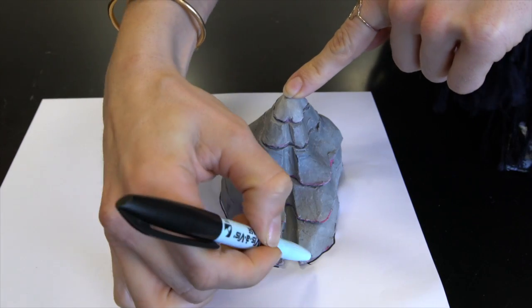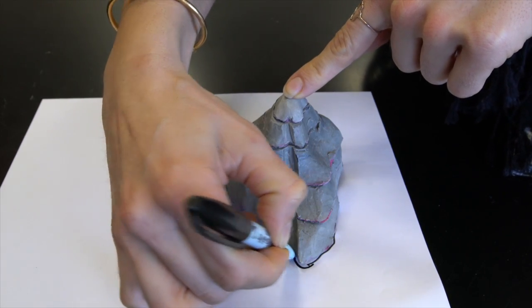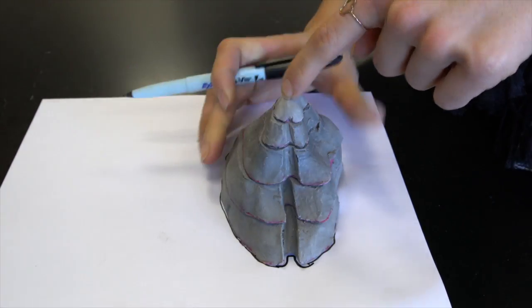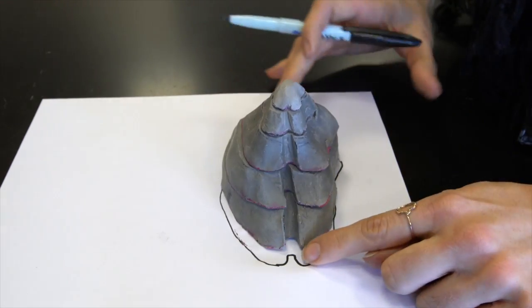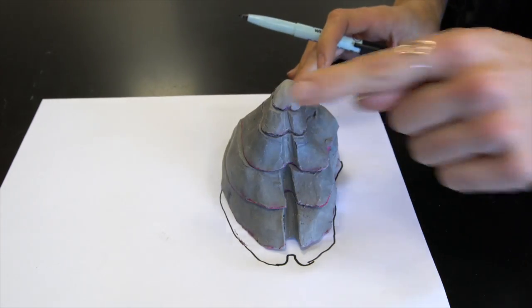Now if you see when I trace where the stream is, it's going to bend, it's going to create a shape of a V and it's going to point upstream.